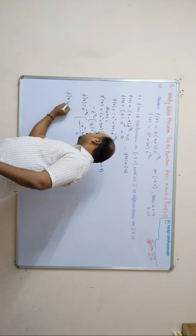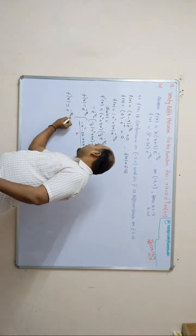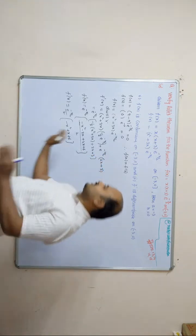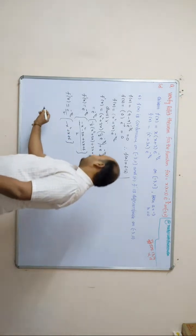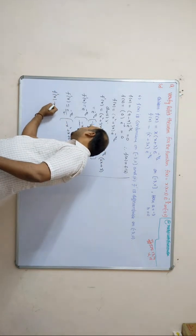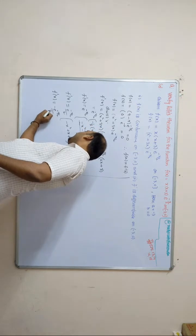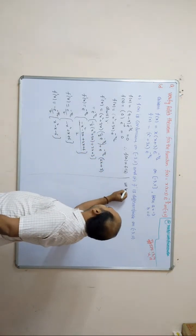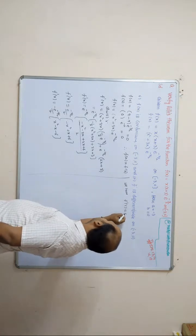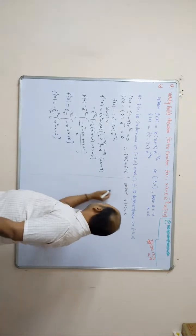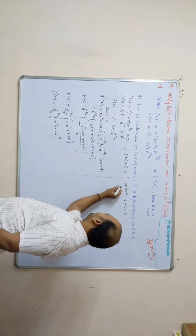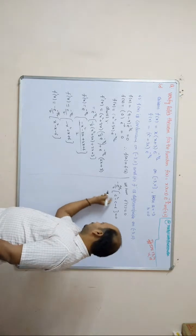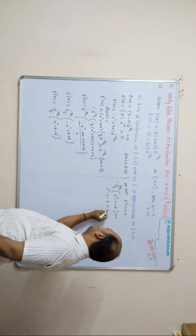We can also write f'(x) = −e^(−x/2)(x² − x − 6) / 2. Setting f'(c) = 0: since e^(−c/2)/2 is never zero, we need c² − c − 6 = 0. Substituting x = c, we solve the quadratic equation c² − c − 6 = 0.